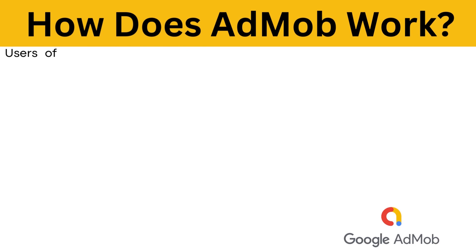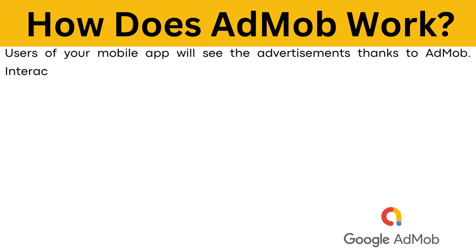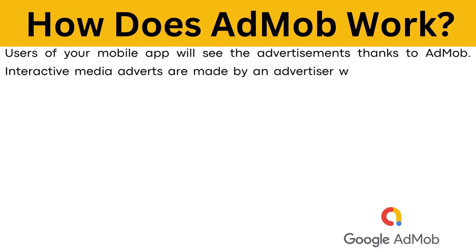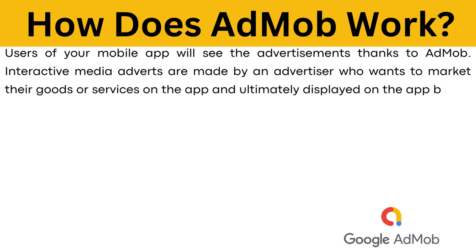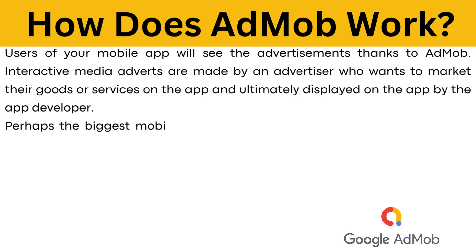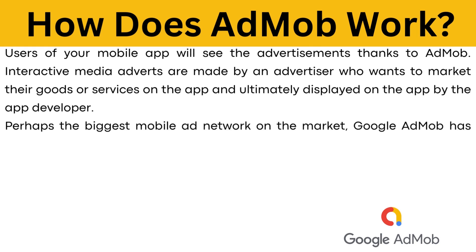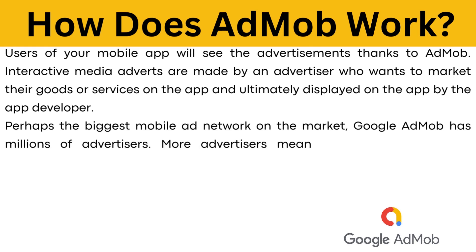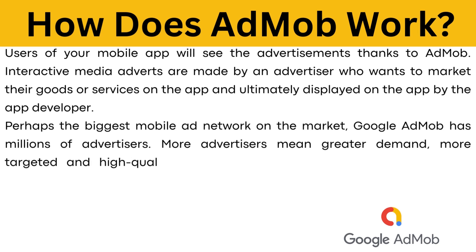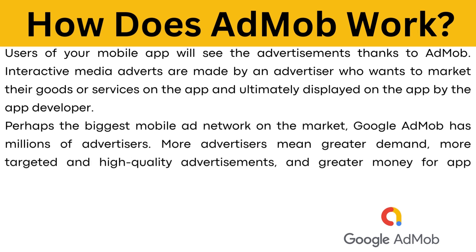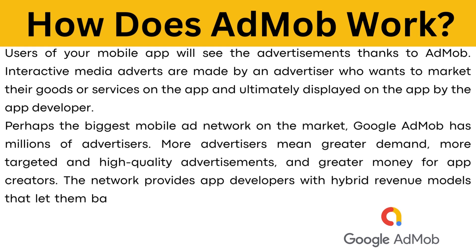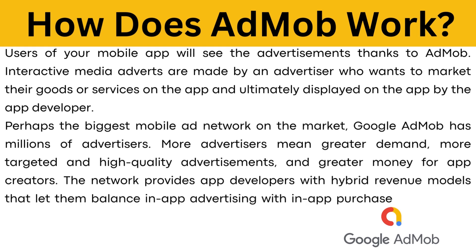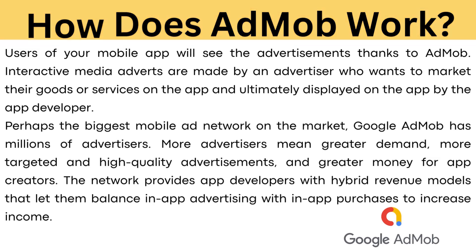How does AdMob work? Users of your mobile app will see advertisements thanks to AdMob. Interactive media adverts are made by an advertiser who wants to market their goods or services on the app, and ultimately displayed on the app by the app developer. Perhaps the biggest mobile ad network on the market, Google AdMob has millions of advertisers. More advertisers mean greater demand, more targeted and high-quality advertisements, and greater money for app creators. The network provides app developers with hybrid revenue models that let them balance in-app advertising with in-app purchases to increase income.